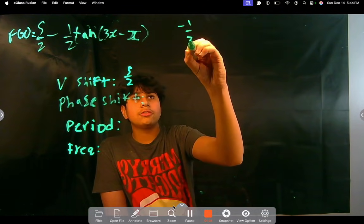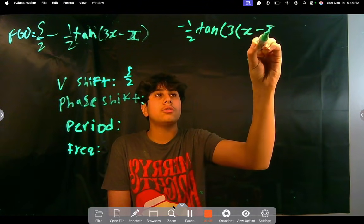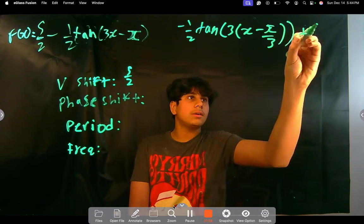So it would be -1/2 tan(3(x - π/3)). That's actually how you'd write it, plus 5/2,